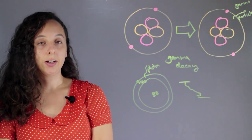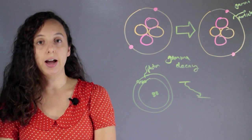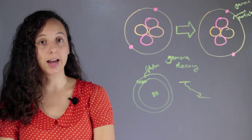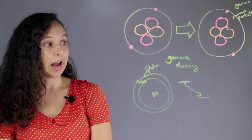And so gamma decay doesn't just randomly happen it usually happens in combination with other types of radiation with alpha decay or beta decay and this will just be a side product.